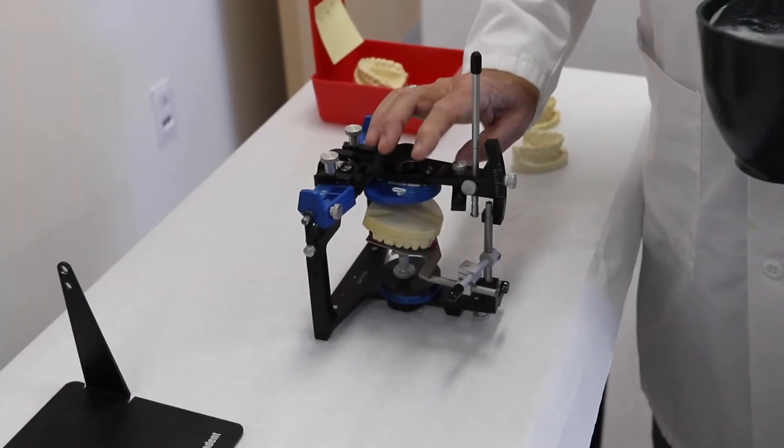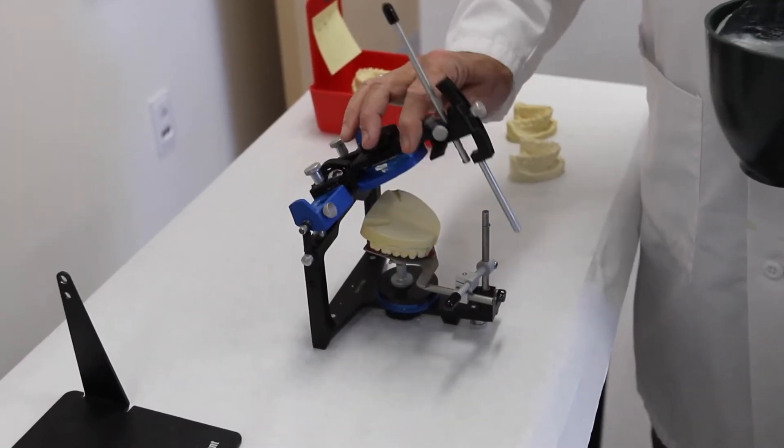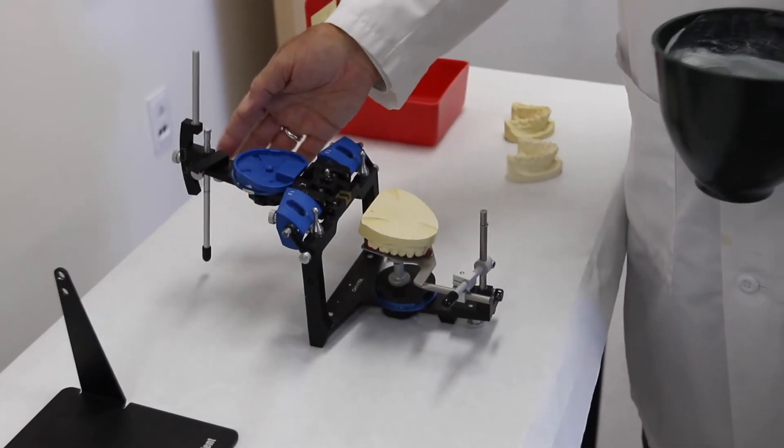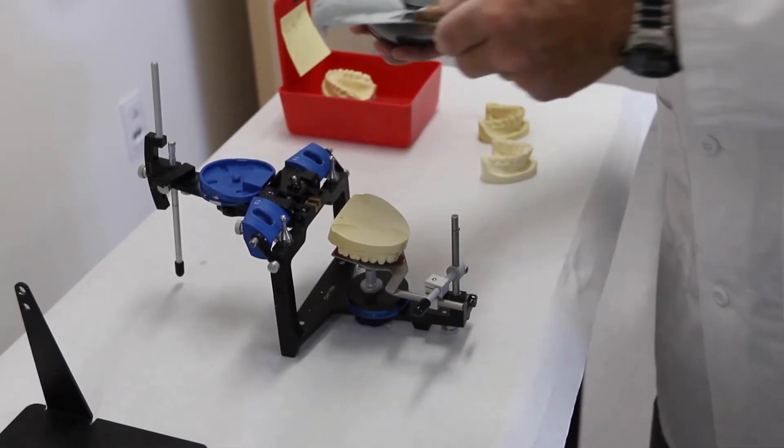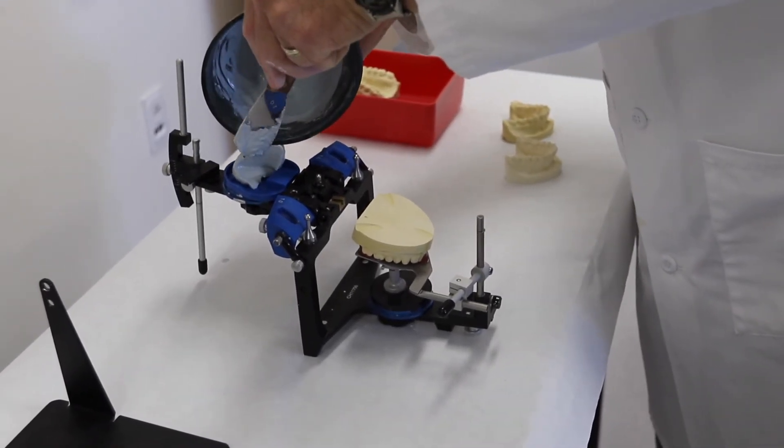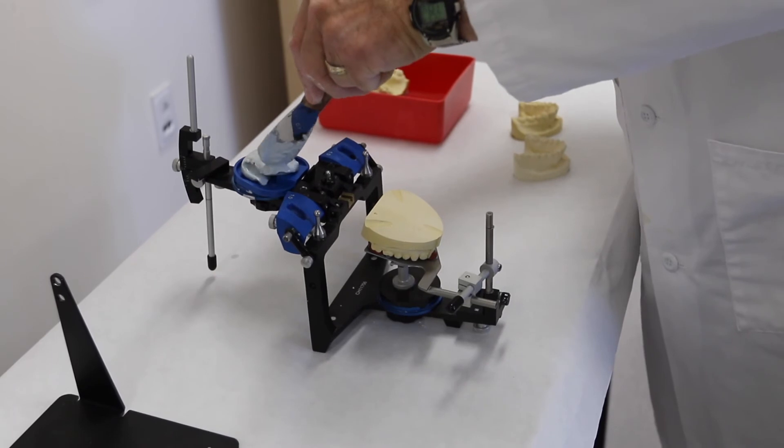At the model now we've set this support pin so that when you tip it back it holds your model and your articulator in place. Take a scoop of the mounting plaster. You can just use your bowl to scoop about onto the mounting plate.